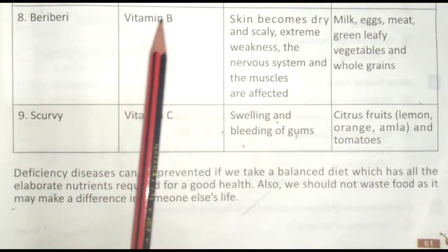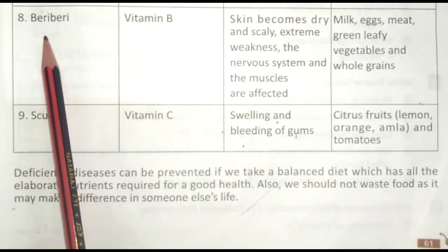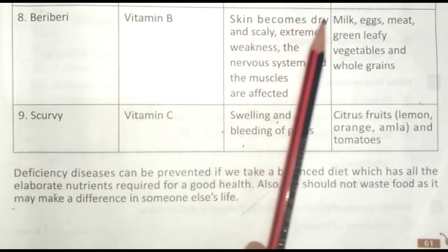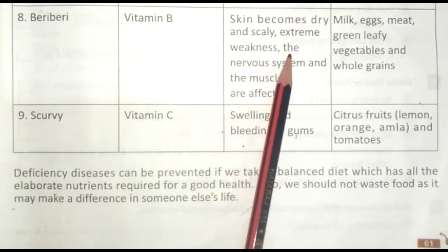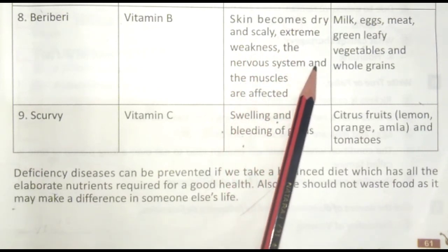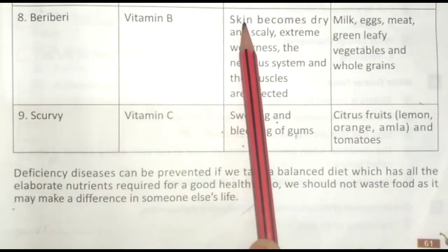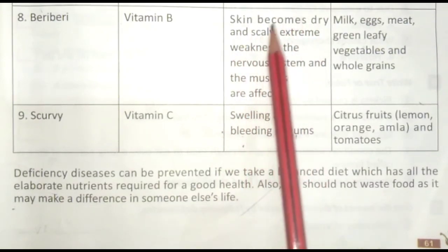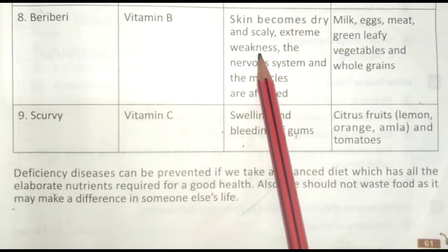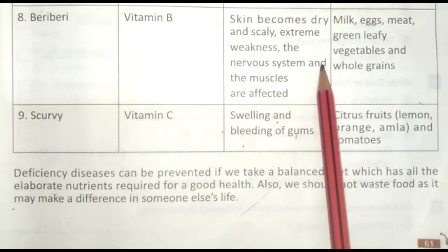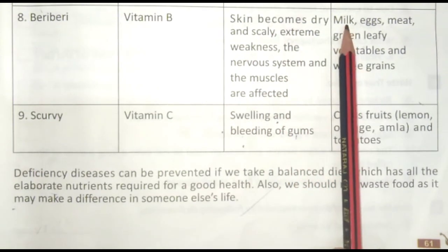Beriberi — Vitamin B ki kami se ye bimari hoti hai. Symptoms: Skin becomes dry and scaly — Twacha sukhhi aur papdi-dar ho jati hai. Extreme weakness — Atyadhik kamzori. The nervous system and the muscles are affected — Tantrika tantra aur manspeshiyaan prabhavit hoti hain.